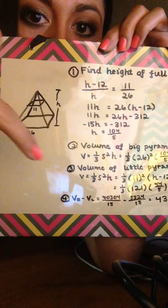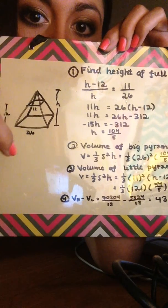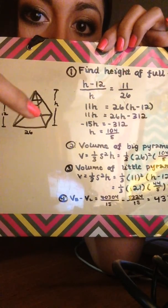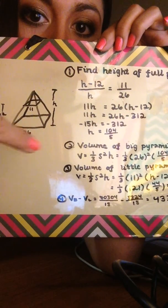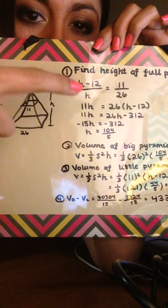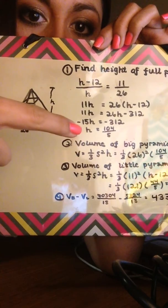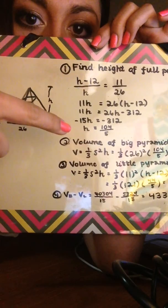So then that's the base of the little pyramid over the base of the big pyramid. And then you solve for h, and you end up with 104 over 5.